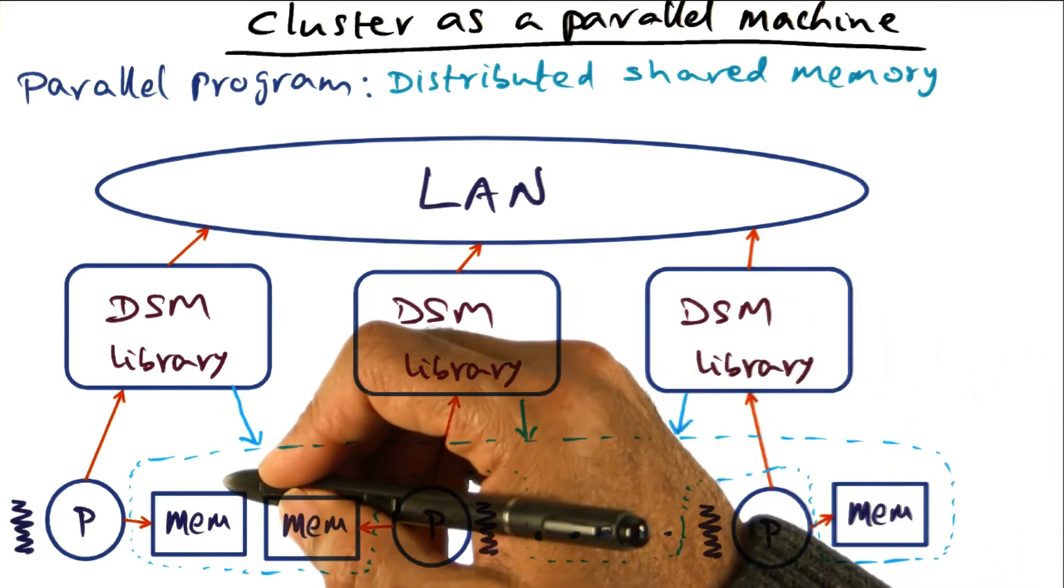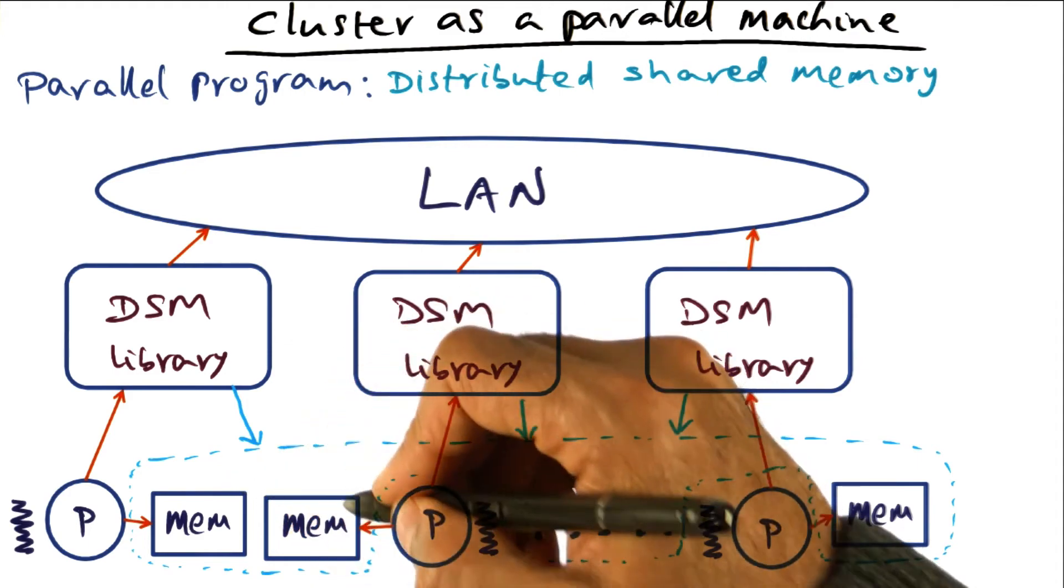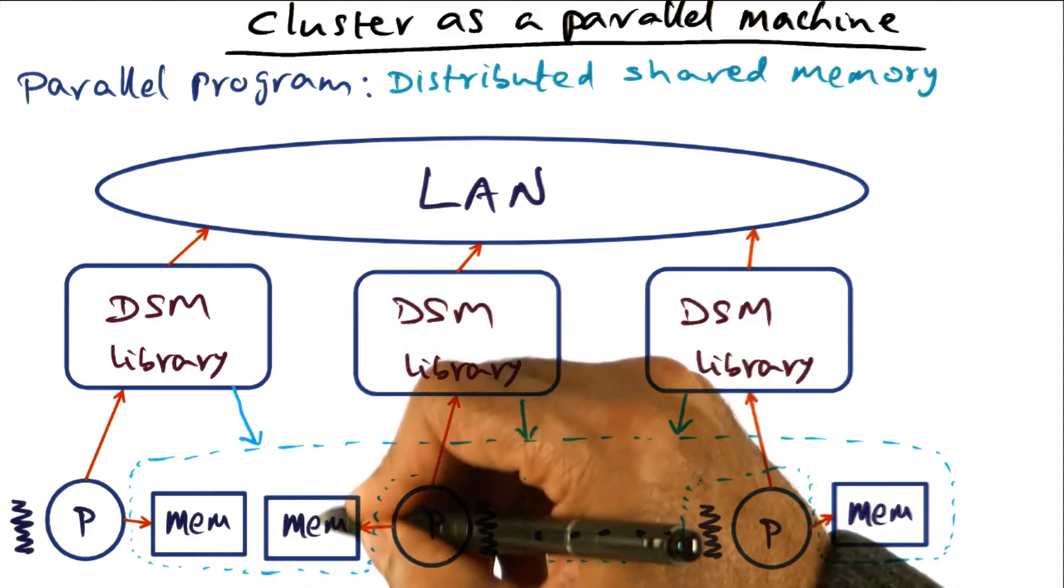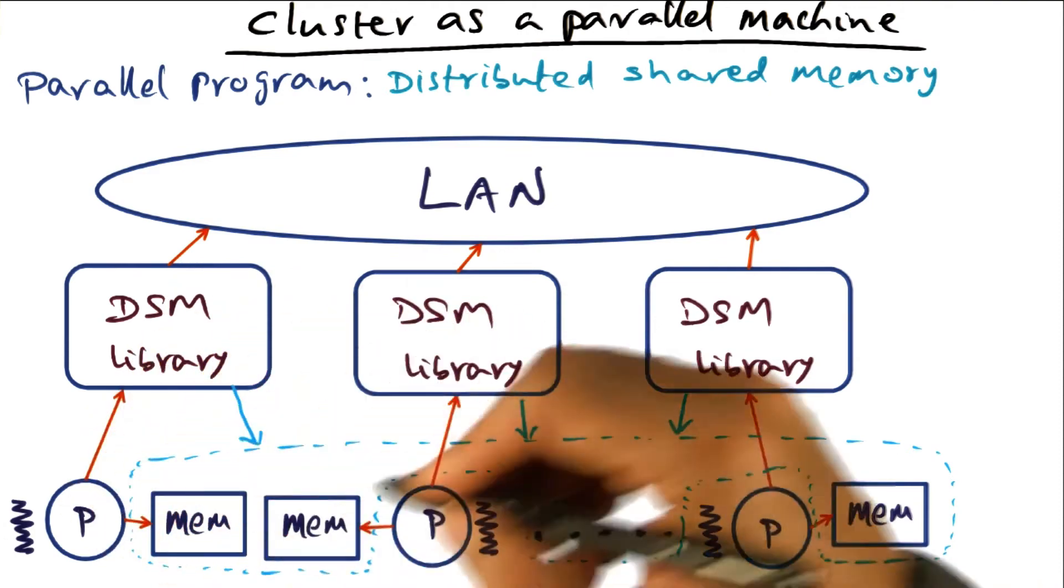So when you make a procedure call, and that procedure call touches some portion of memory that happens to be on remote memory, that memory will magically become available to the thread making the procedure call.